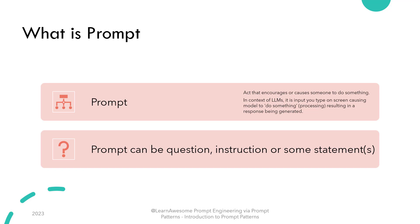Prompt literally is the user interface or screen where you provide input to a computer program via textual input. Prompt in natural language also means an act that encourages or causes someone to do something. Since here we are talking in terms of language models like ChatGPT, where the screen where you type messages is called the prompt. Whenever you type something in that input field, it causes the large language model to do something, the end result being generating a response. Your prompt causes the large language model to do some processing and generate a response.